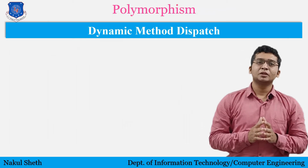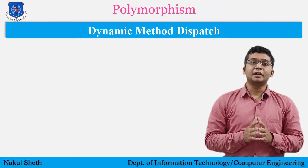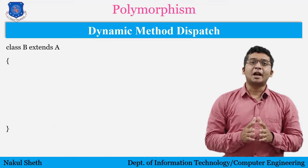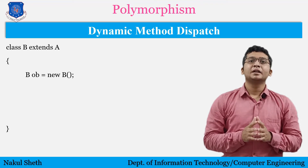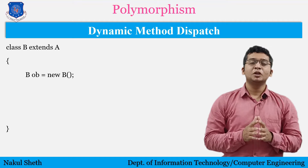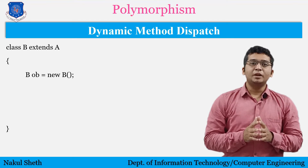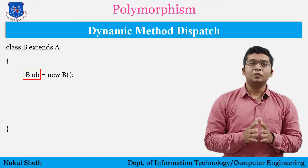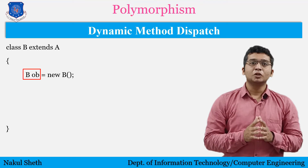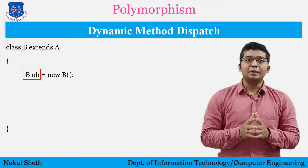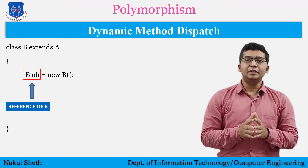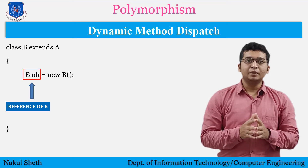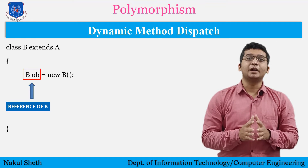Let us start with what is Dynamic Method Dispatch. As discussed in the previous video, whenever I am creating an object — say I have class B, which is a child class of class A — and I create an object using 'B ob = new B'. This statement comprises two parts: 'B ob' and 'new B()'. When I write 'B ob', I am creating a reference of type B.